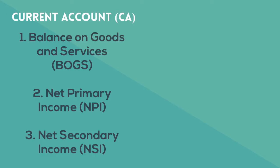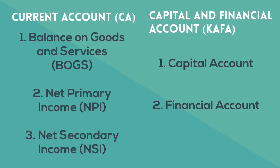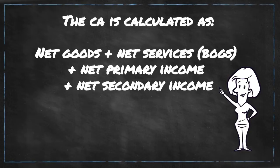Now that we've looked at the components of the capital and financial account, we can look at the balance of payments as a whole. To make sense of the trends and patterns in the balance of payments, we need to make some calculations first. To calculate the current account, you simply add the balance of goods and services with the net primary income and the net secondary income.